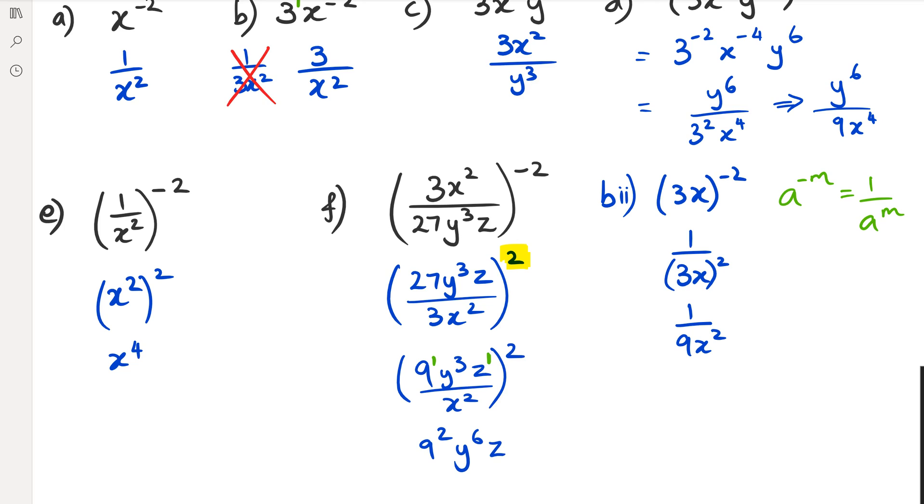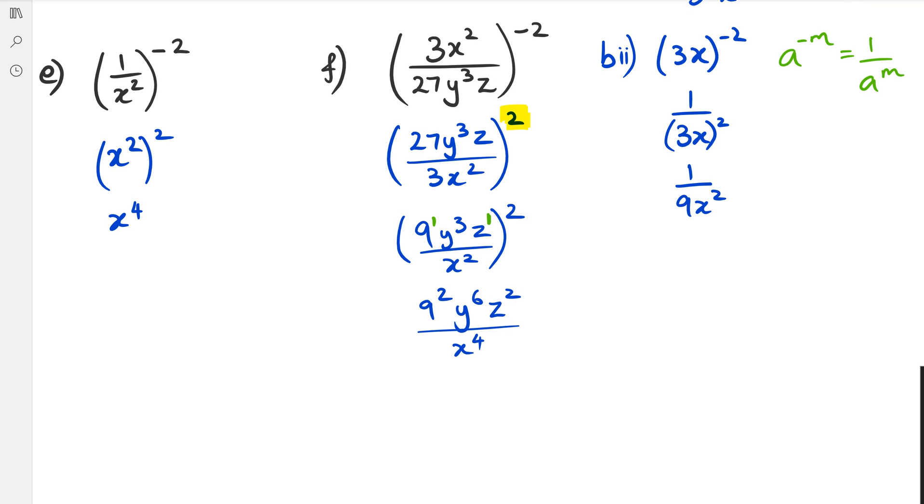And the whole thing is divided by x to the power of 2 times 2, which is 4. So when we do this, we get 9 squared, which equals to 81. And we got y to the power of 6 z squared over x to the power of 4.